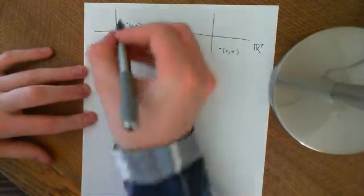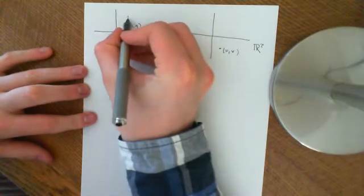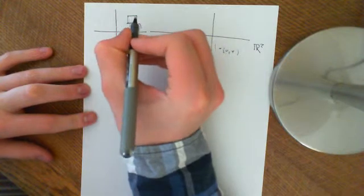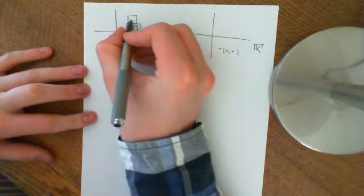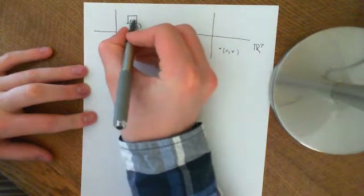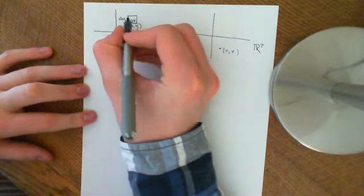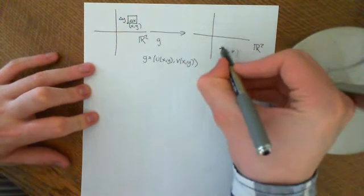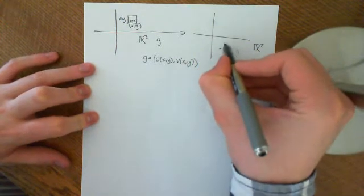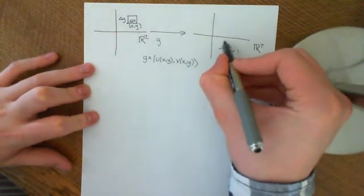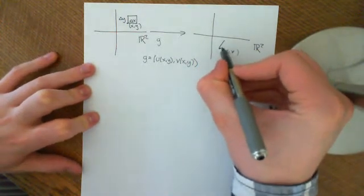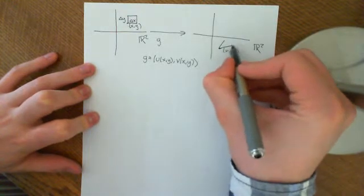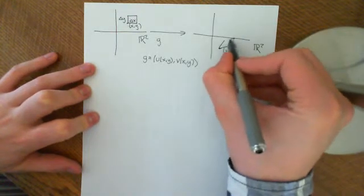We've seen that if you take an infinitesimal little box of side-length delta x and side-length delta y, and if we transform that into this R² here, then in general it won't go to another box or another square — it will go to a little parallelogram.